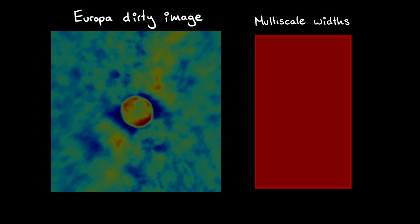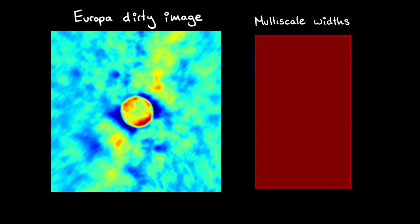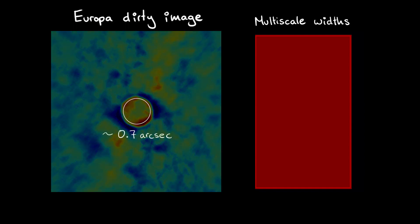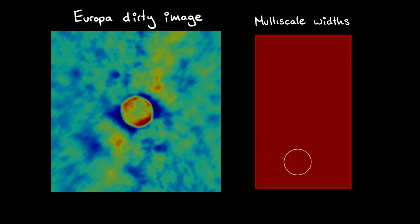For structures with very bright and sharp edges, such as Europa, a size scale close to the largest scene in the image works best for the largest scale in our CLEAN model. In our case, the disk of Europa is about 0.7 arcseconds across, and therefore the largest size scale we select should be close to or smaller than 0.7 arcseconds, as this is the largest scale in the image.